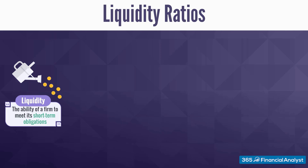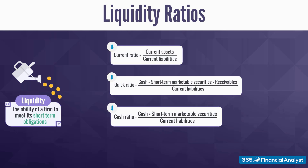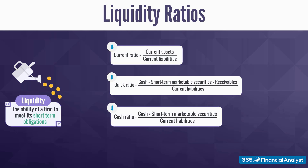Some of the most commonly used measures are the current, quick, and cash ratios. As you can see, they all have current liabilities in the denominator. The numerators are slightly different, yet they all comprise types of current assets. So, in a way, liquidity multiples help you understand the relationship between a firm's current assets and current liabilities.